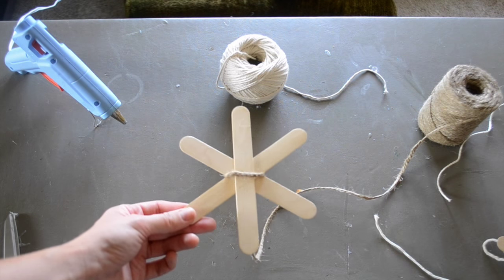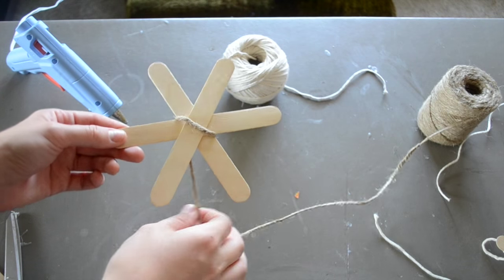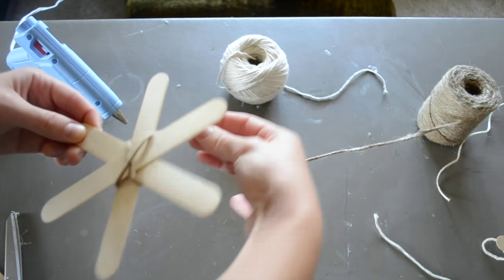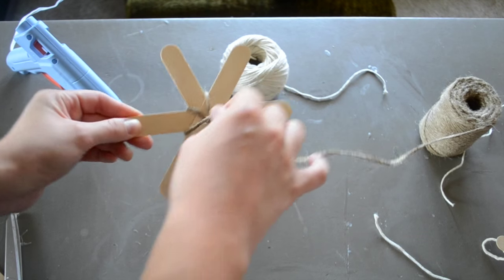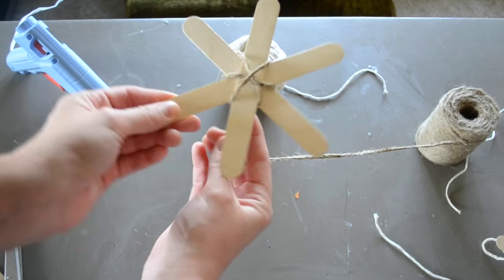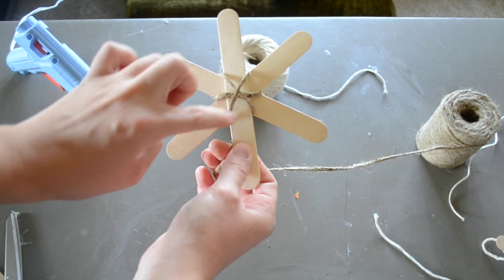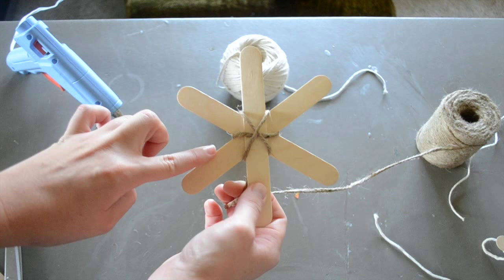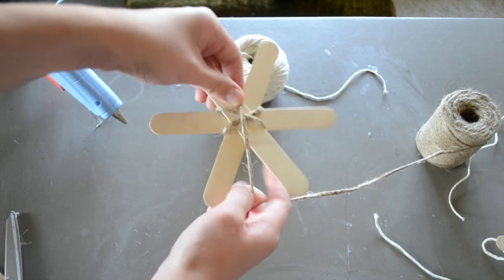Now we're going to wrap the center portion. So you want to come in between each opening, creating a center with one, two, three, four, five, six different pieces of jute. That's just keeping it even.